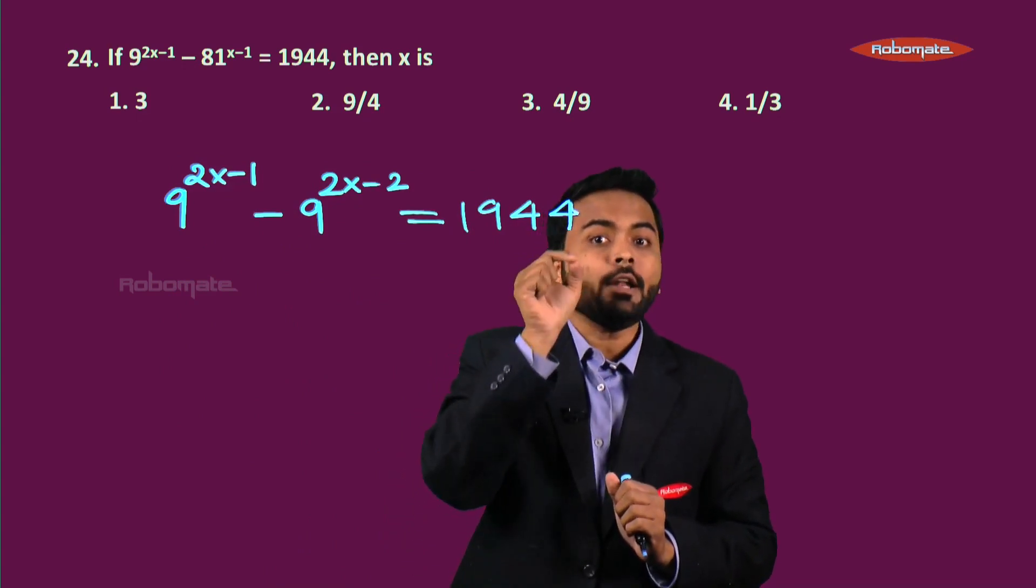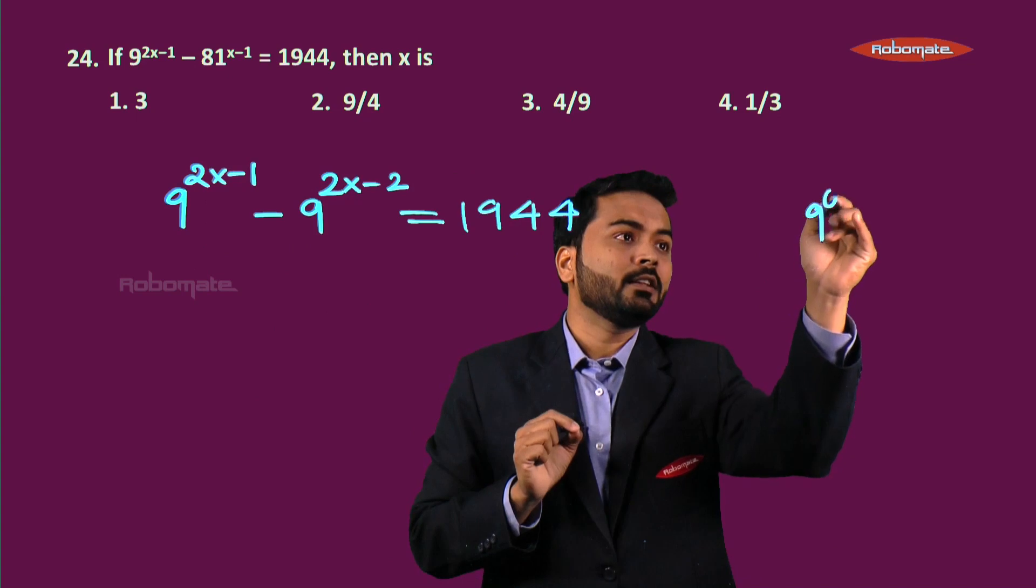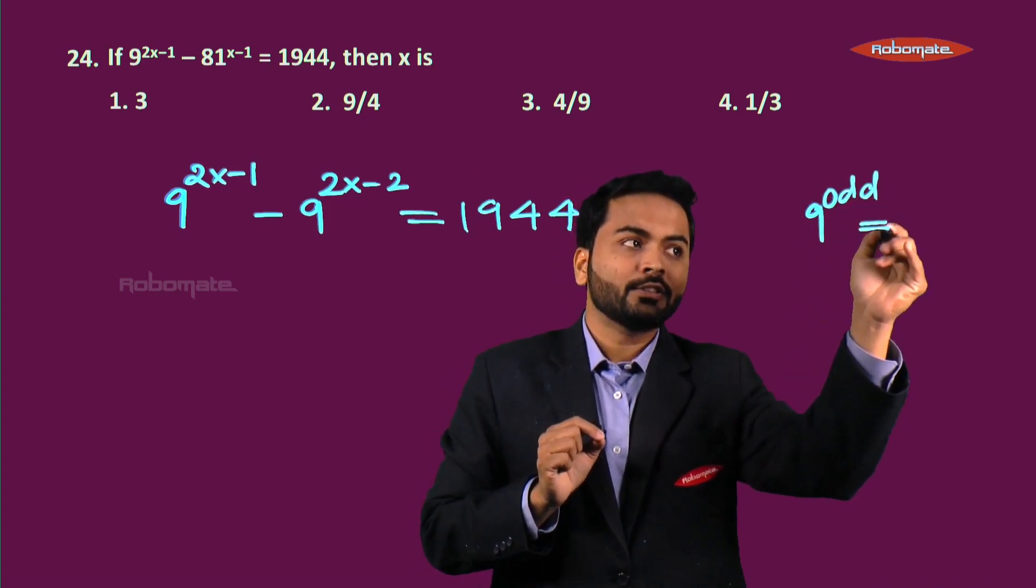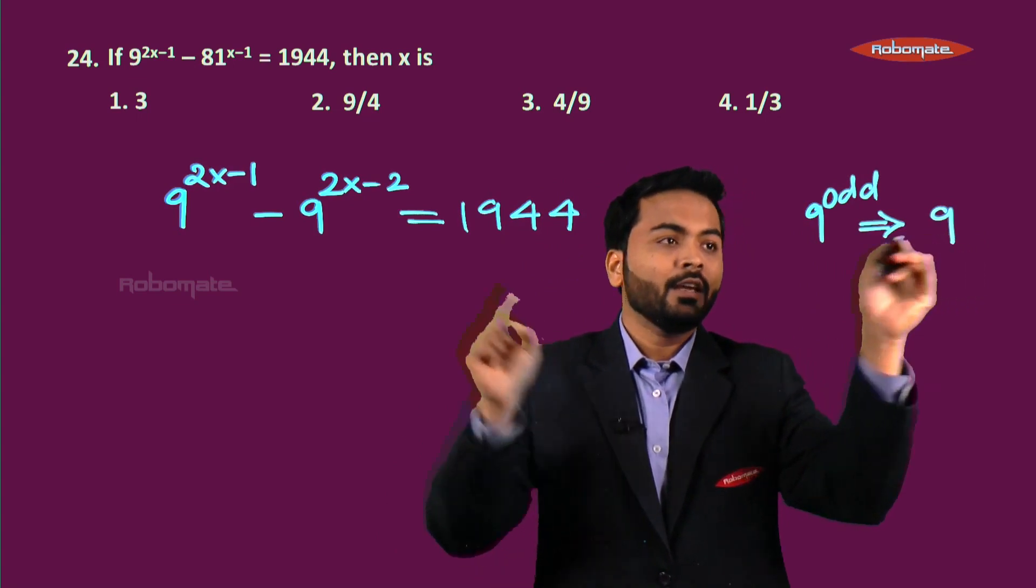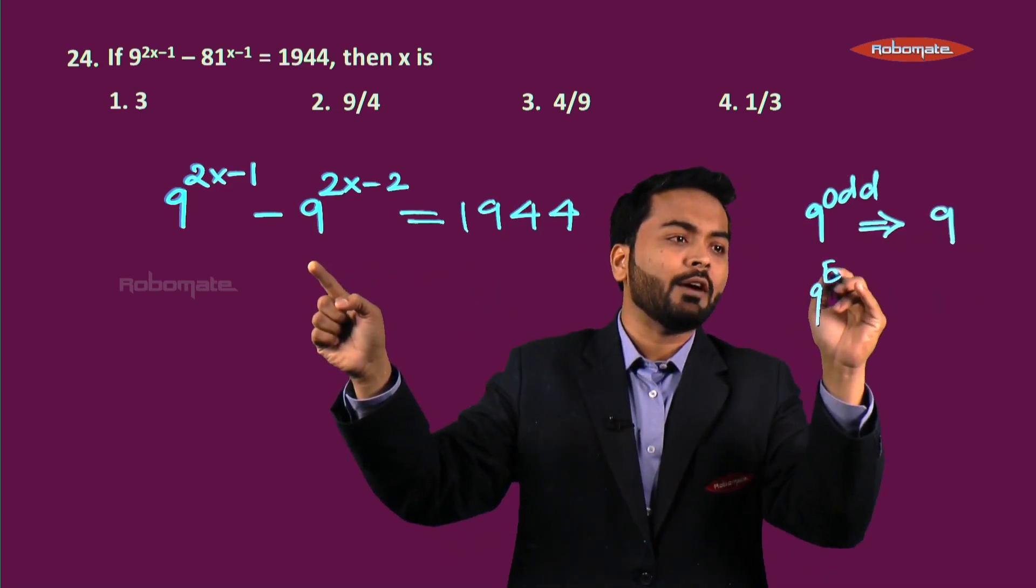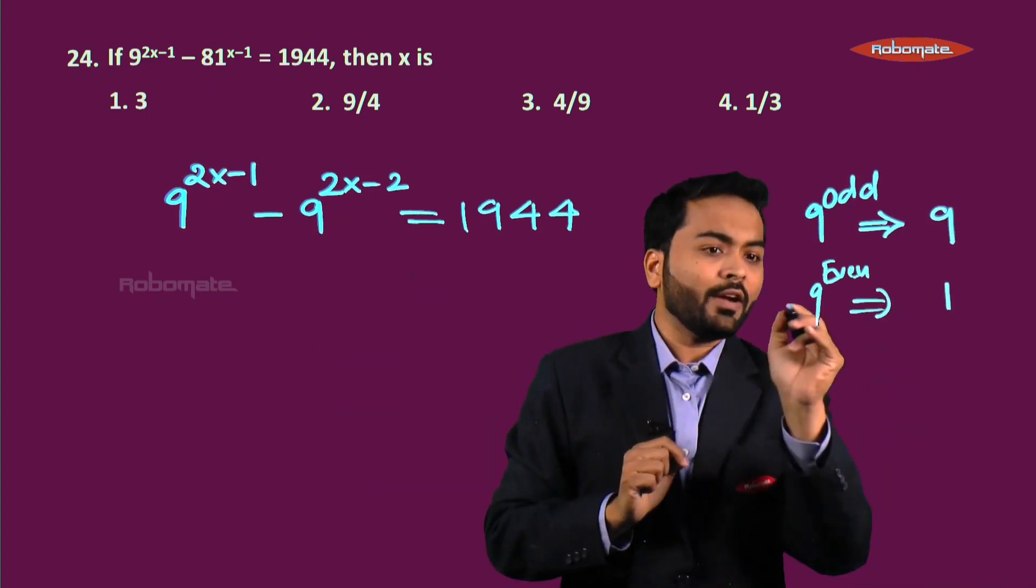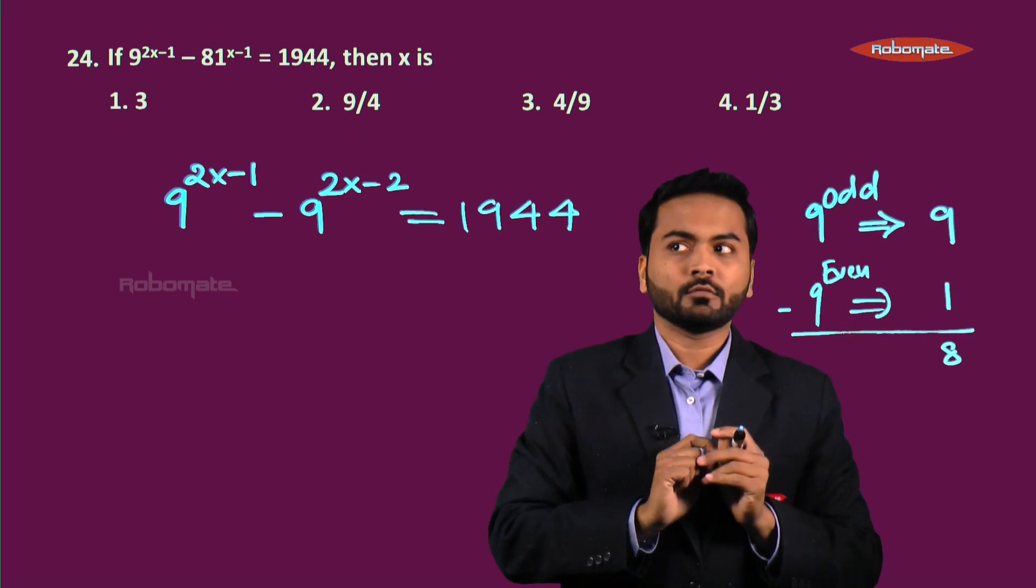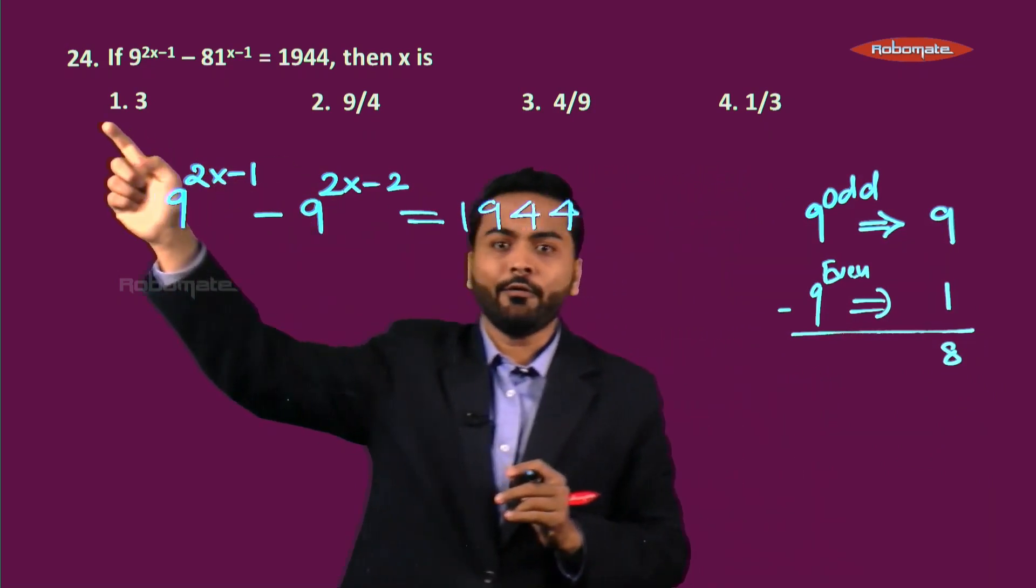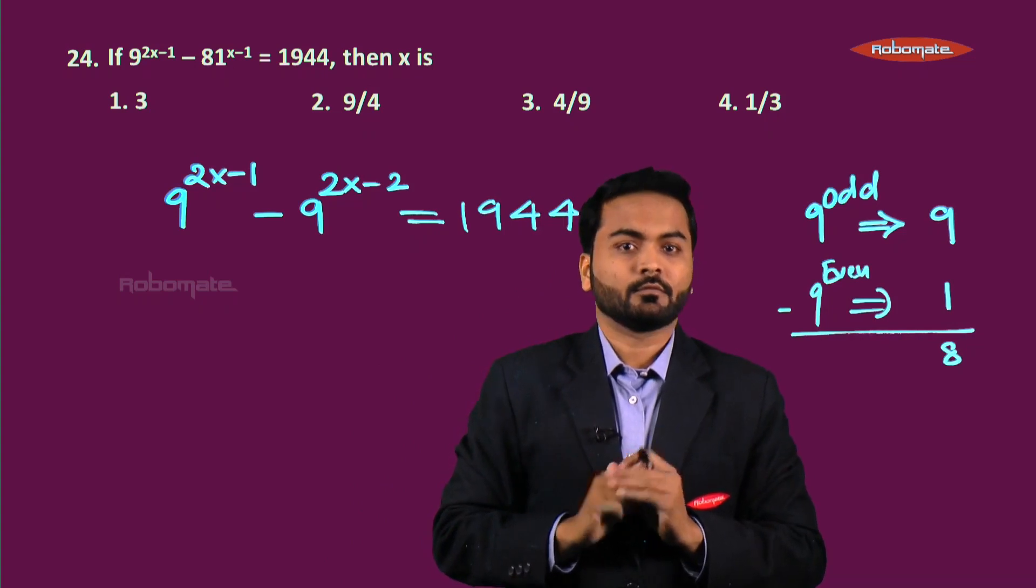Now 9 raised to an odd power would always end in 9. And 9 raised to even power always ends in 1. So if I say the difference, the difference would always end in 8, which means the first option 3 gets eliminated. Great.